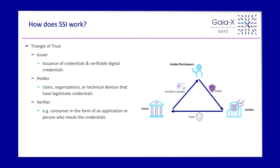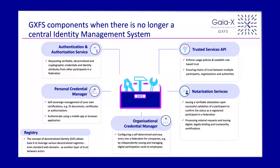What we designed to realize this triangle of trust were some components which helped to realize it. We have for the holder, for example, the personal credential manager. We have for organizations an organizational credential manager, which is more on the verifier side but can be on the issuer side as well. We have a trusted services API to support automated decisions for the verification or for the issuing. And we have some services around it for authentication and authorization to enable existing identity systems to join the system.